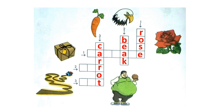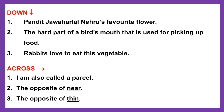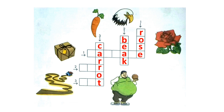Now, children, let's move to the next section. Number 1. I am also called a parcel. The answer is Package. So, we will write Package in the across direction. P, A, C, K, A, G, E. Package.